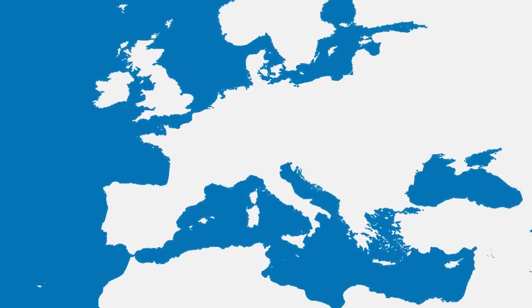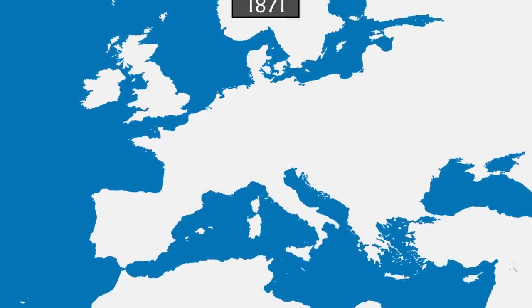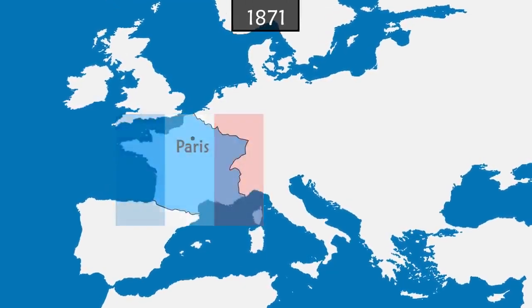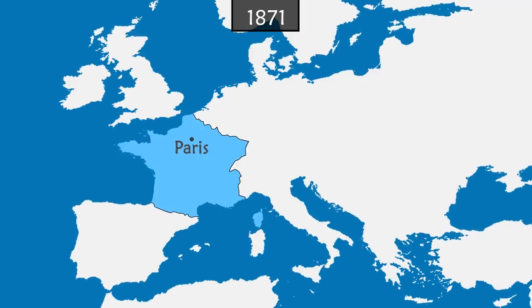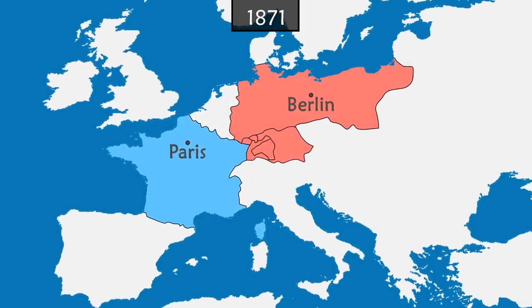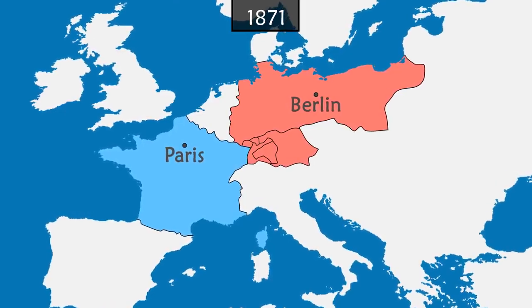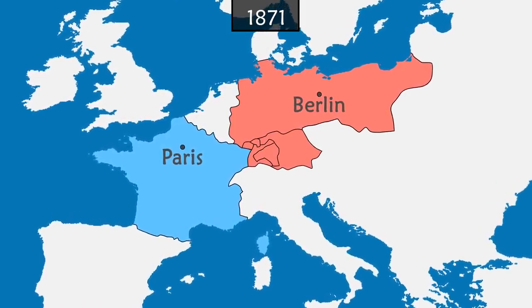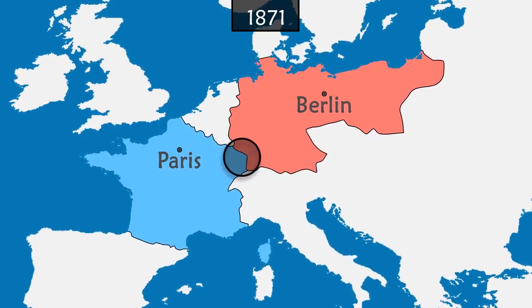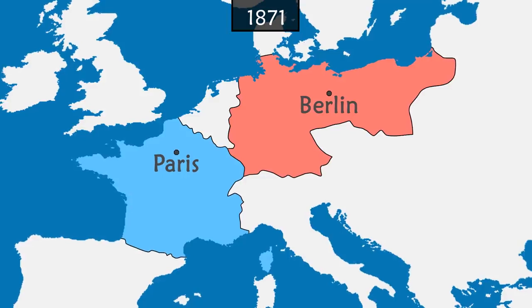To understand the origins of World War I, we start in 1871 at the end of the Franco-German War between the French Empire and the Confederation of North Germany, allied with the German states of the south. After six months of fighting, France is defeated and the victors unite to form the German Empire. Alsace and Moselle are annexed to the new empire, frustrating the French side.